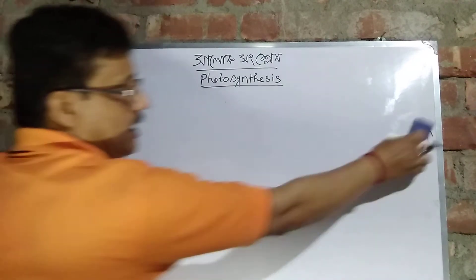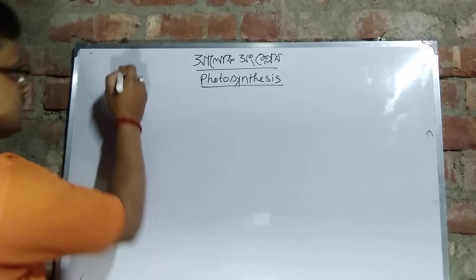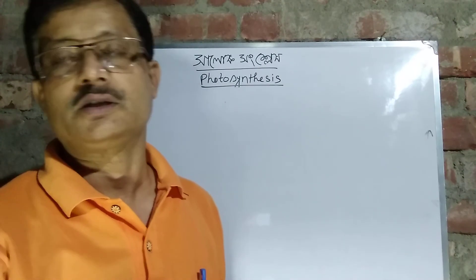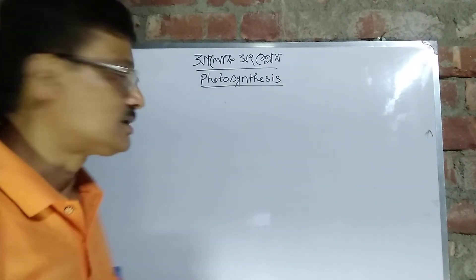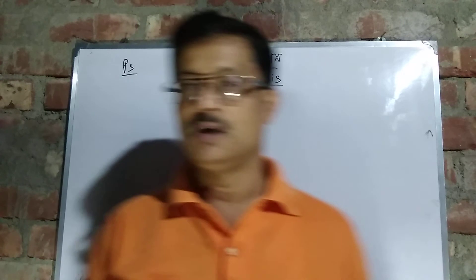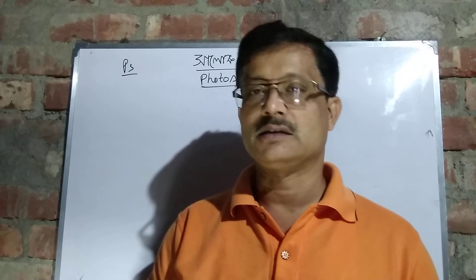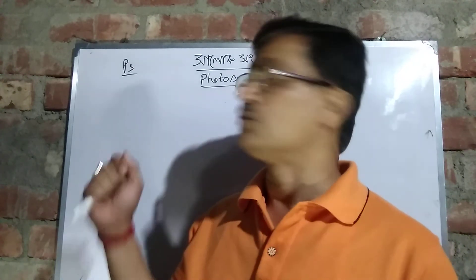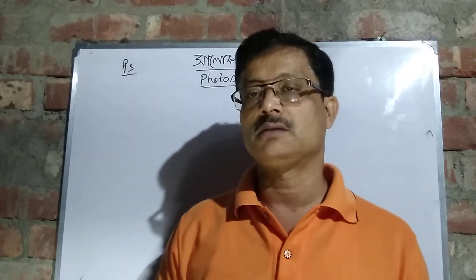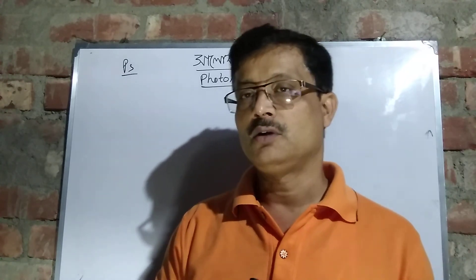What we know about phosphorylation is that we have to generate a pigment system, or PS. There is a phosphorylation. A photosystem includes phycoerythrin, phytochrome A, B, and C. So this is called the PS system, or the pigment system — PS1 and PS2.